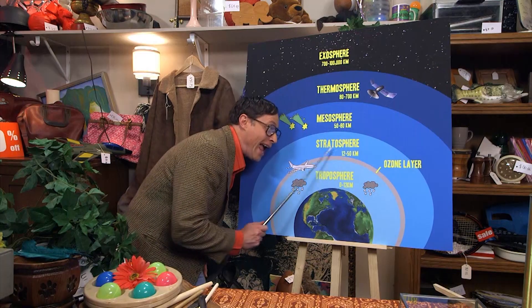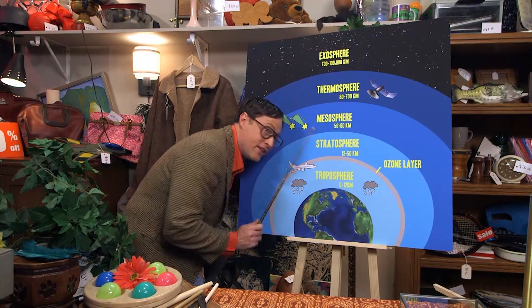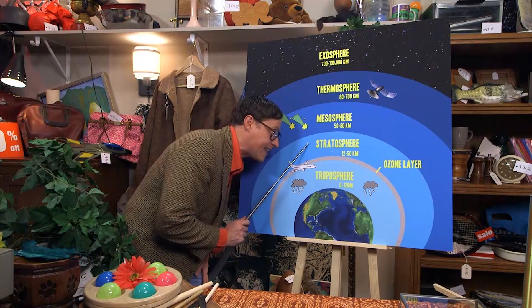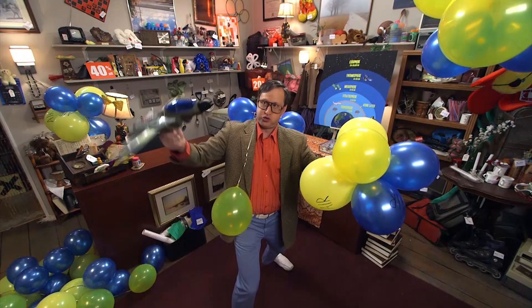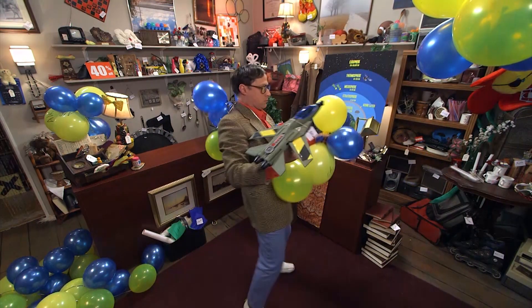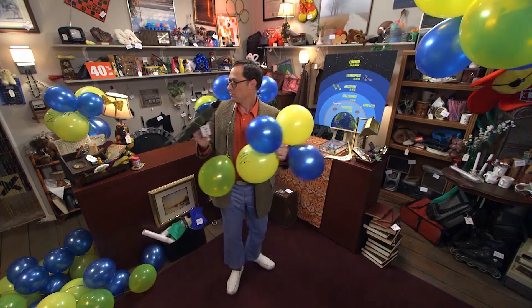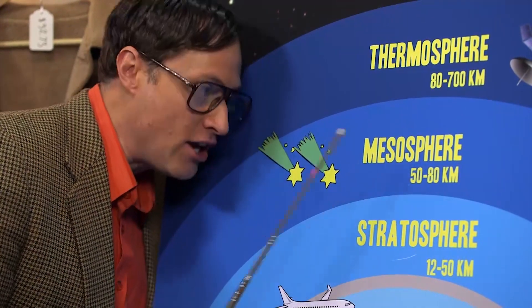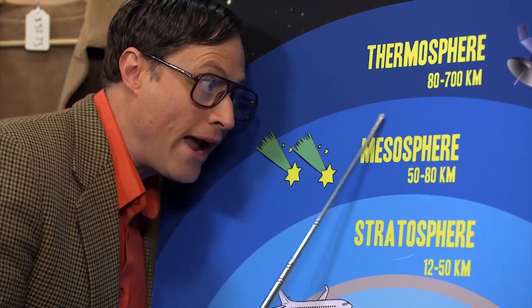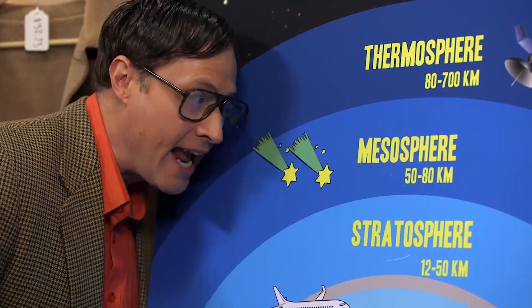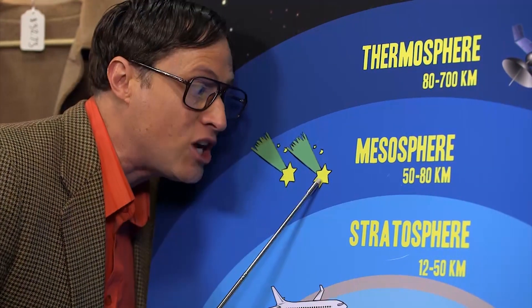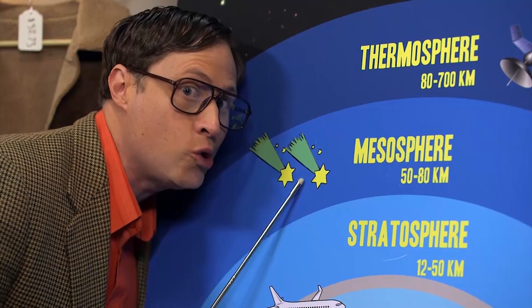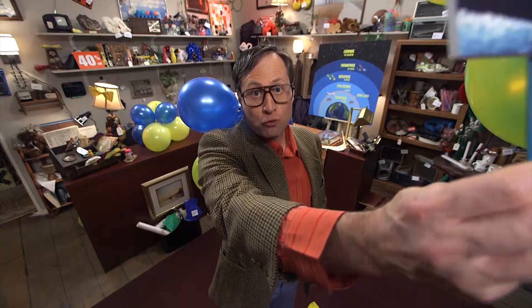Next layer: the stratosphere. There's fewer air molecules in this layer, and it's where jets fly. Next layer: the mesosphere. There's even fewer air molecules in here, and it's where meteors burn up and turn into shooting stars. Fire!